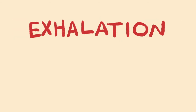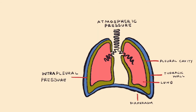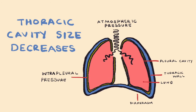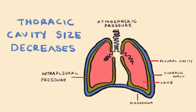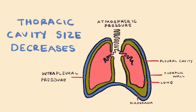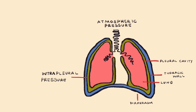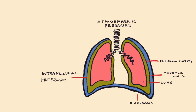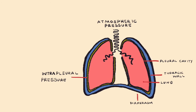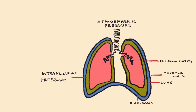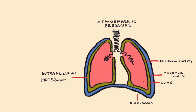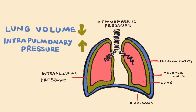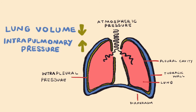Now let's talk about exhalation, also known as expiration, and air flow out of the lungs. During exhalation, the thoracic cavity size and volume decreases as the diaphragm relaxes upwards and the external intercostal muscles relax. Forced exhalation will involve contraction of the internal intercostal muscles as well, but we're not going to focus on that here. When the thoracic cavity size decreases, the lungs will deflate — the negative intrapleural pressure makes the lungs stick to the thoracic cavity wall, so when thoracic cavity volume decreases, so does lung volume. And when lung volume decreases, intrapulmonary pressure will increase, as defined by Boyle's Law.